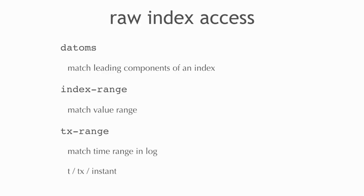You can navigate raw indexes in three different ways: datums, which just walks the full index starting with leading components; index range, which allows you to get a specific range from start to end in the value index (AVET); and TX range, which allows you to walk the log — the basis behind the UI that lets you click around transactions in the console. These all work conceptually similarly — you can transduce over them with offset, chunk, limit, and so on.